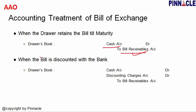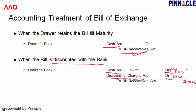When the bill is discounted with the bank: the drawer goes to the bank and explains that in three months he will receive money from the bill, but needs money today. The bank takes the bill and pays the amount less a discount fee. For example, on a 3,000 rupee bill discounted at 100 rupees, the drawer gets 2,900 rupees. Entry: Cash Account debit 2,900; Discounting Charges Account debit 100; Bill Receivable Account credit 3,000 — because the bill receivable asset is given away and cancelled.